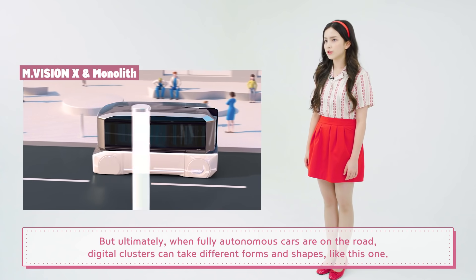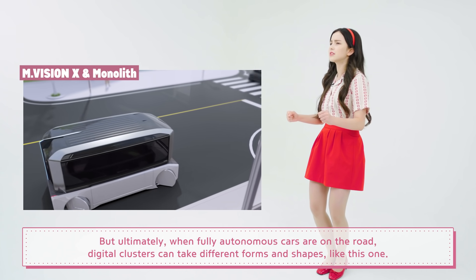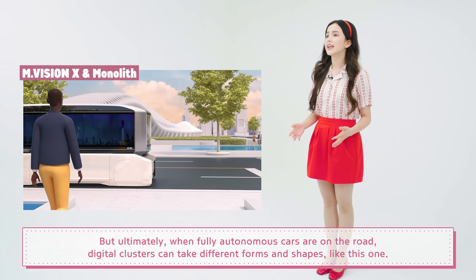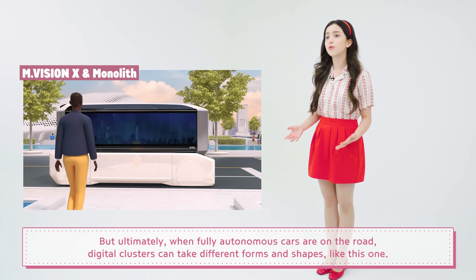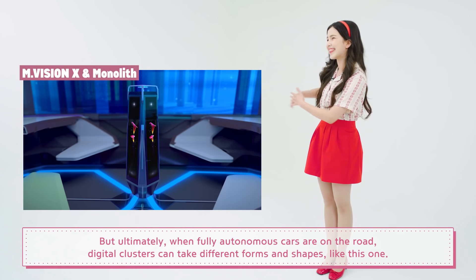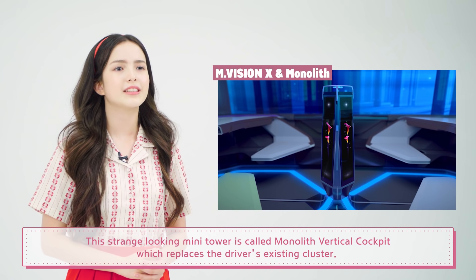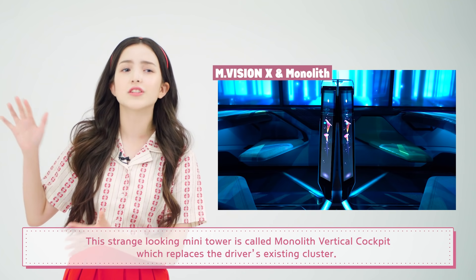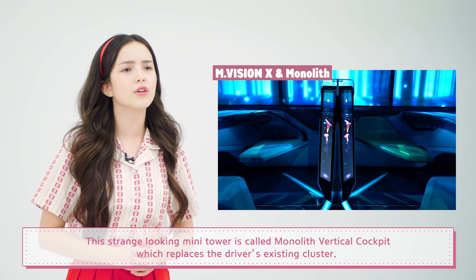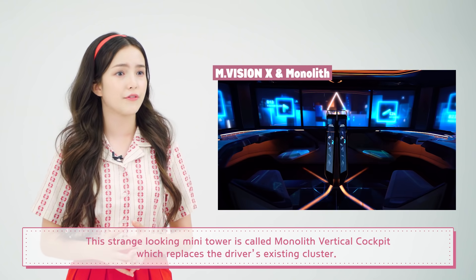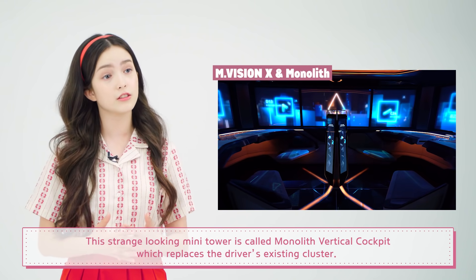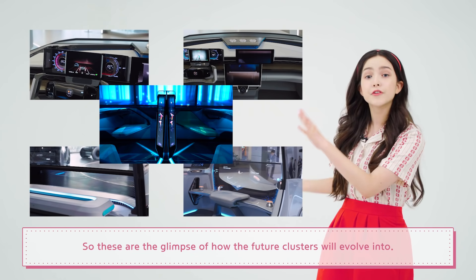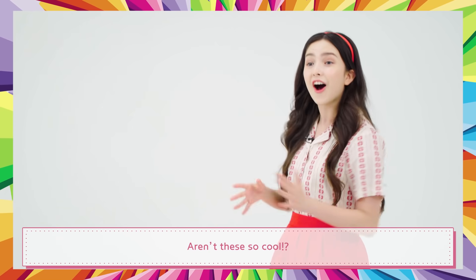But ultimately, when fully autonomous cars are on the road, digital clusters can take different forms and shapes like this one. This strange-looking mini tower is called the monolith vertical cockpit, which replaces the driver's existing cluster. So these are a glimpse of how future clusters will evolve.